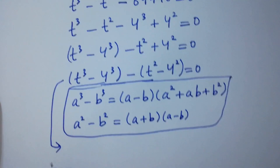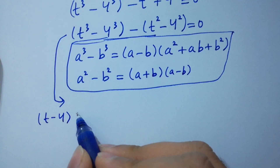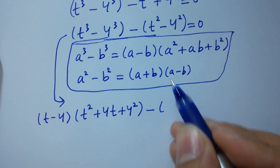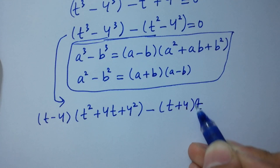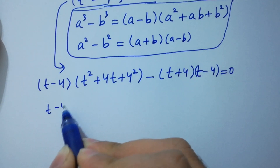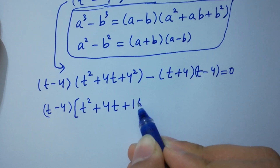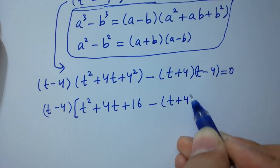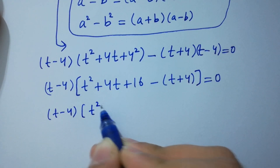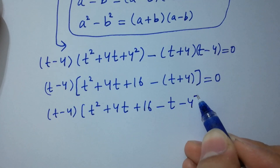Applying these identities: t cubed minus 4 cubed equals (t minus 4)(t squared plus 4t plus 16), and t squared minus 4 squared equals (t plus 4)(t minus 4). Taking (t minus 4) as a common factor, we get (t minus 4) times (t squared plus 4t plus 16 minus (t plus 4)) equals zero, which simplifies to (t minus 4)(t squared plus 3t + 12) equals zero.